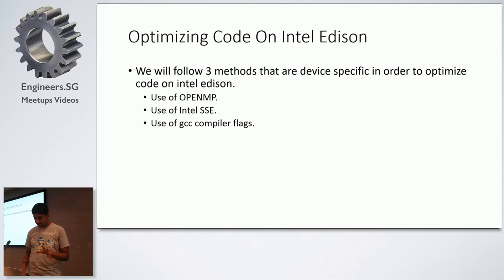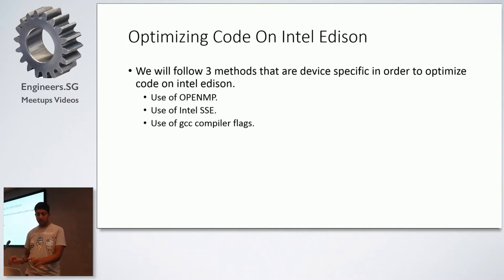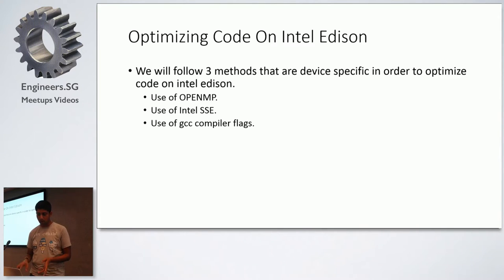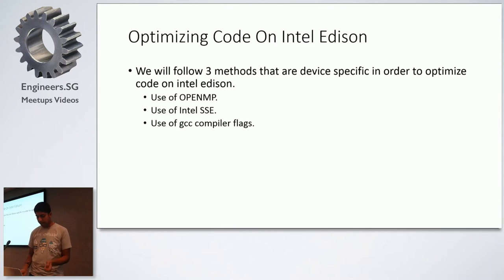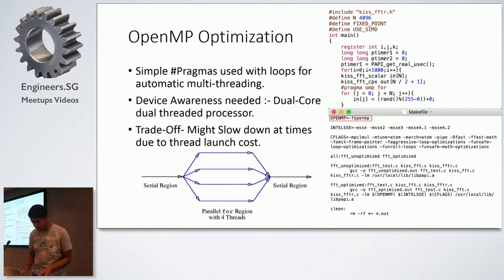The optimizations I'll teach you today — one of them is OpenMP. This will be the only optimization that requires you to maybe add something to the code. The other two are simply compiler flags. I'll show you each one by one.